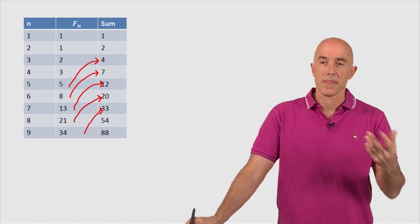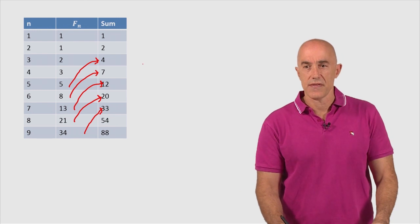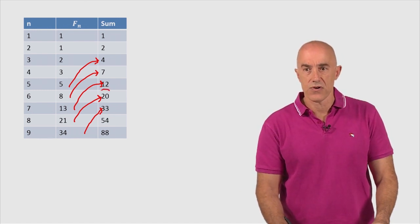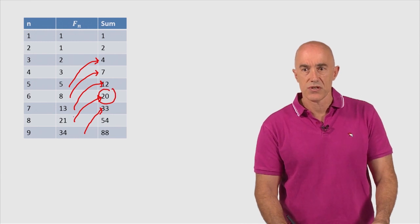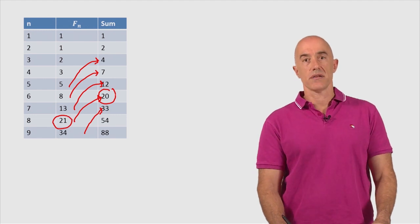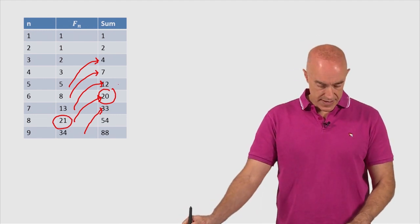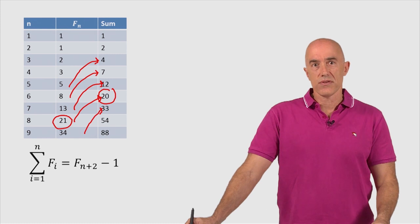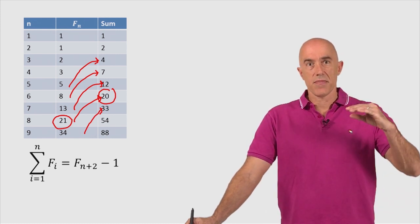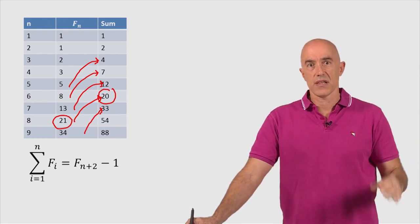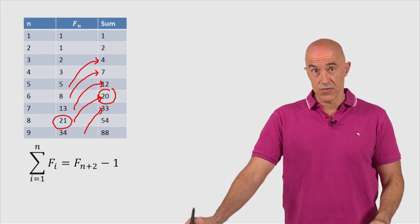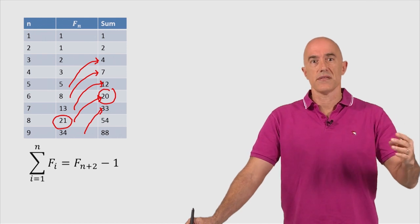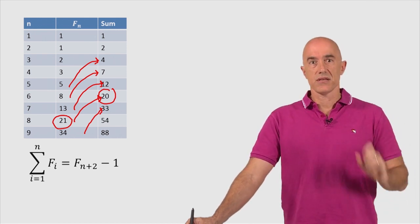So this looks like a general rule that we can take the sum of the first 6 Fibonacci numbers looks to be related to the 8th Fibonacci number minus 1, right? 1 less. So we can write that as a formula. So our conjecture is that the sum from i equals 1 to n of F sub i is F sub n plus 2, right? 2 more than the last Fibonacci number that we indexed, 2 more than the last Fibonacci number that we summed minus 1. Okay, that's our conjecture.